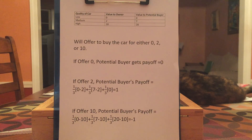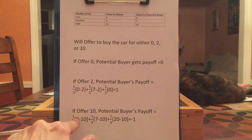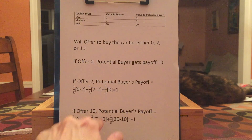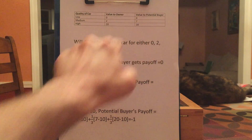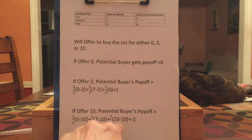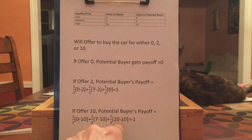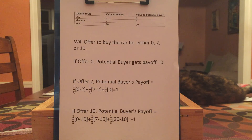What if you offer to buy the car for ten? It's always going to be accepted. One third of the time you've gotten something worthless but paid ten for it. Another third of the time you've gotten something worth seven to you but paid ten for it. But the final third of the time you'll have gotten something worth twenty to you and paid ten for that. If you calculate this out, it comes out to negative one — actually worse than offering nothing at all.